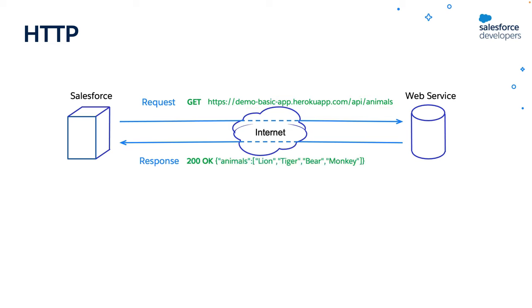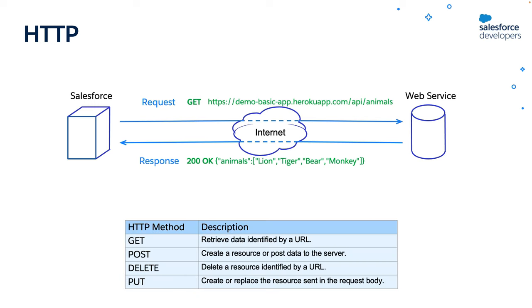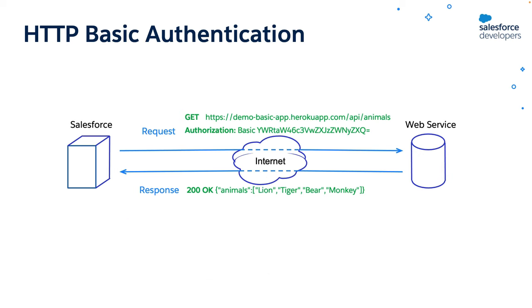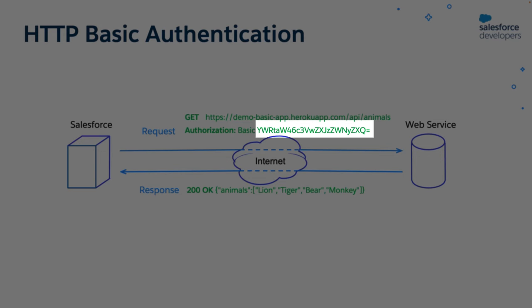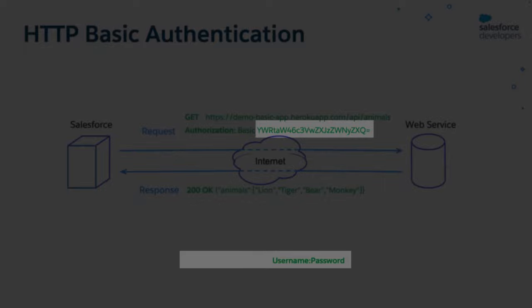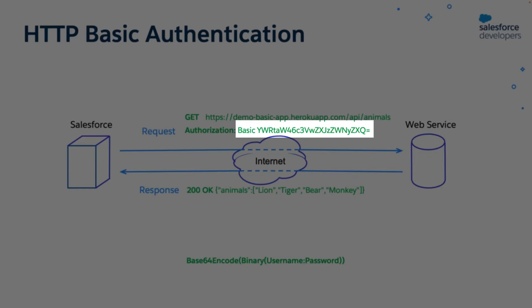Some other common HTTP methods include POST, DELETE, PUT, etc. The POST method is used to create a resource, the DELETE method to delete a resource, and PUT method to create or replace a resource. For the HTTP basic authentication scheme, the authorization header is sent with the request. This authorization header holds the credentials in encoded format. In this case, the username and password are concatenated with a colon, converted to a binary value, and then encoded using Base64 encoding. It is prefixed with 'Basic ' and sent as an authorization header.